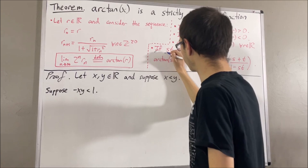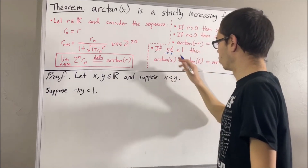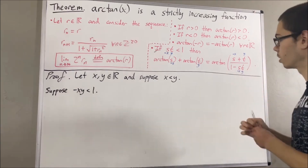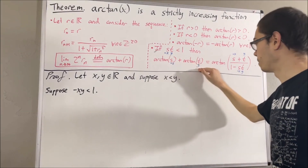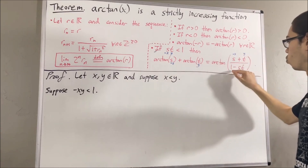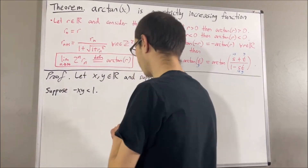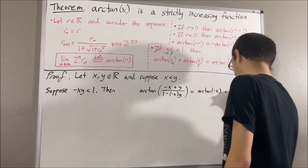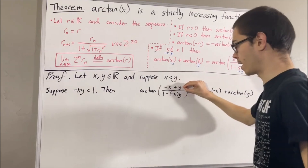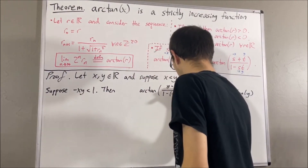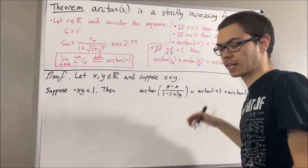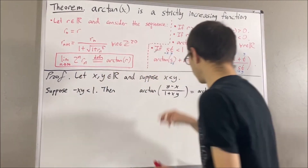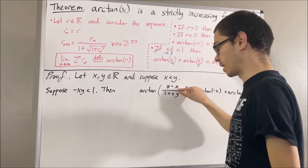In this case, we're just going to apply the arctangent sum formula. We'll take s to be negative x and t to be y. With this choice of s and t, the arctangent of negative x plus the arctangent of y is equal to the arctangent of negative x plus y over 1 minus negative x times y. Let me re-express the numerator as y minus x and the denominator as 1 plus xy.